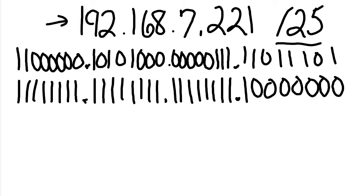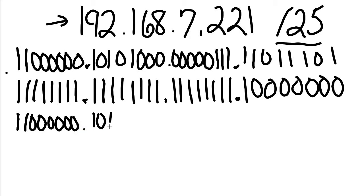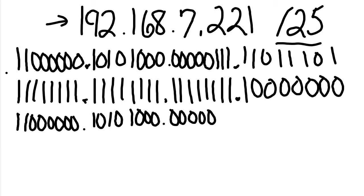Now I need to figure out my network address by ANDing the IP address and the subnet mask together. Going through each octet: the first octet ANDs to 11000000, the second to 10101000, the third octet — since all those are zeros ANDed with ones — gives us 00000000, and the last octet: 1 AND 1 is 1, then 1 AND 0 is 0, followed by all zeros, giving us 10000000.